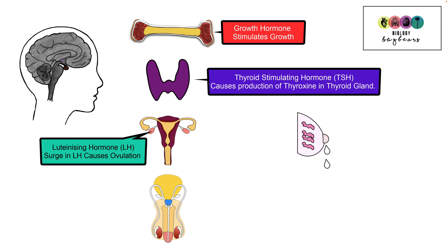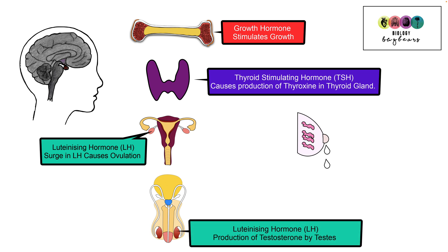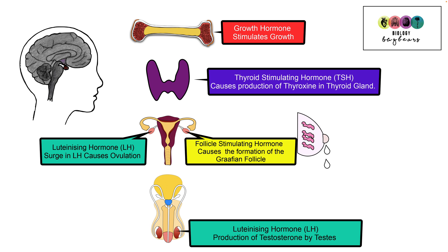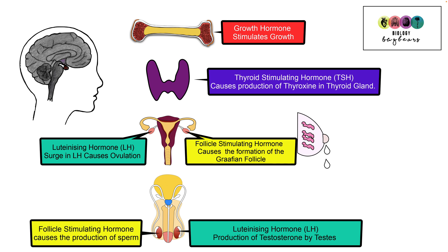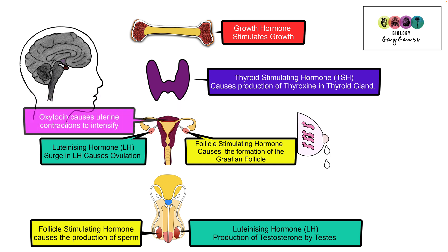Luteinising hormone travels in the blood to the ovaries where a surge in luteinising hormone causes ovulation at approximately day 14 of the menstrual cycle. Luteinising hormone also causes the production of testosterone by the testes. Follicle stimulating hormone travels to the ovaries where it causes the formation of the Graafian follicle, and in the testes it causes the production of sperm. Oxytocin is another hormone produced by the pituitary gland and it travels to the walls of the uterus where it intensifies uterine contractions during labour.